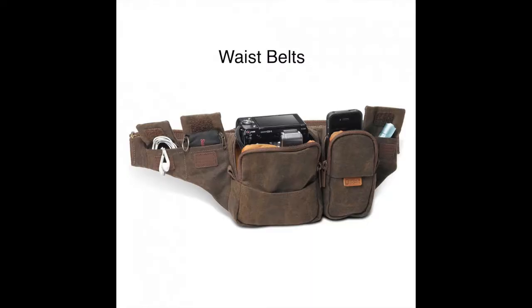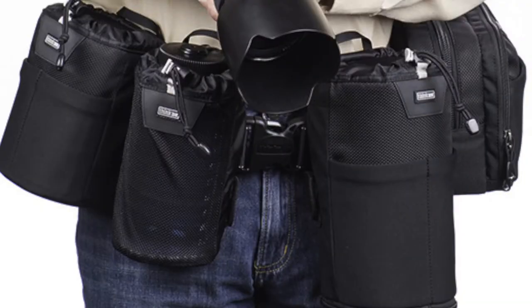Waist Belts may not look the coolest, but are very functional. Many come with modular interior dividers so you can sculpt the storage space to suit you. You will be able to fit your camera plus some accessories and maybe a small extra lens or two.